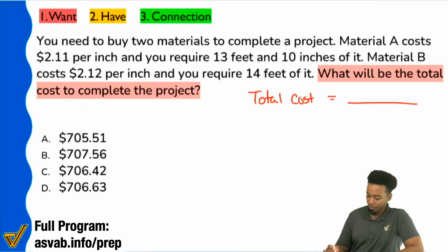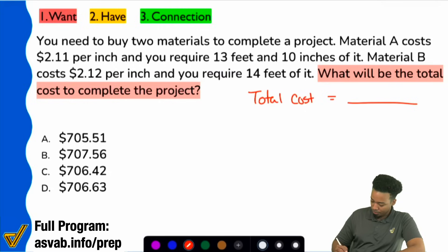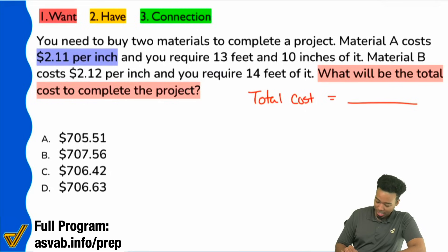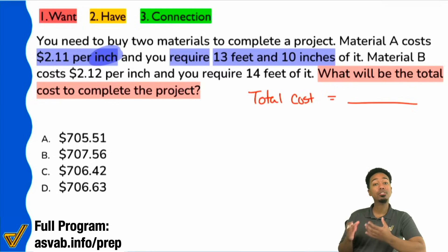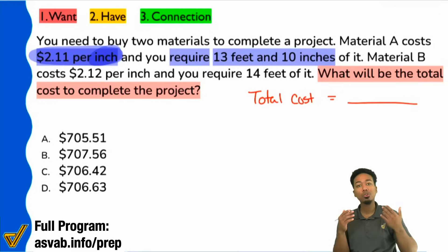That's actually the right way to go because we see that it says material A costs $2.11 per inch, and you require 13 feet, 10 inches of it. And then you have material B costing $2.12 per inch, and then you require 14 feet of it. So the reason that this isn't a straightforward, very simple question is because right here, we see that it says $2.11 per inch, but we require 13 feet and 10 inches. So that tells me that we have to convert units. Our price point is basically per inch. We can't just multiply 2.11 times 13 feet, wrong units. It says per inch, not per foot. So we have to make sure we convert.